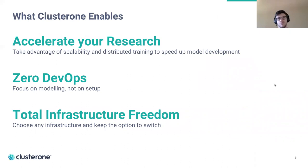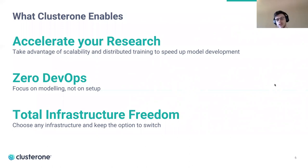What ClusterOne is built for: number one, it accelerates research by enabling deep learning scientists and engineers to take advantage of scalability and distributed training to speed up model development. We also make sure engineers and scientists spend their time on modeling, not setup, by providing an out-of-the-box system that works without DevOps. Finally, our platform runs on any infrastructure — it's infra-agnostic — enabling teams to run on any cloud or on several clouds at the same time while keeping the same environment, platform, and workflows.